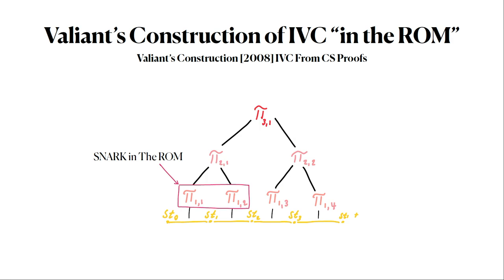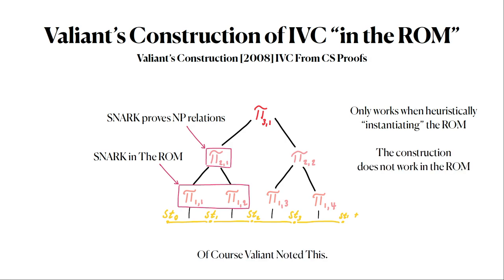The problem here is that this proof down here is in the ROM, but the proof itself can only prove things about NP relations, like plain computation without any random oracles. It means that in order for this to work, you need to realistically instantiate the ROM for these proofs. Which means that the construction is not actually in the random oracle model. The construction does not exist in the ROM.